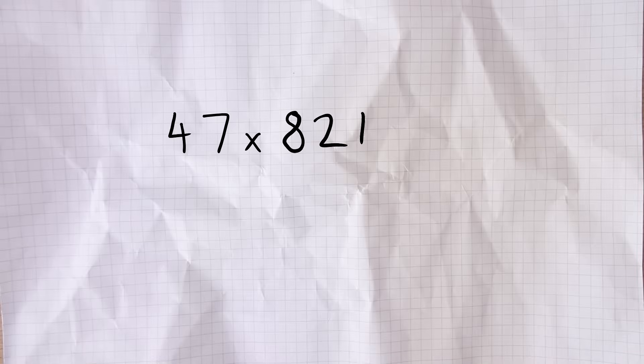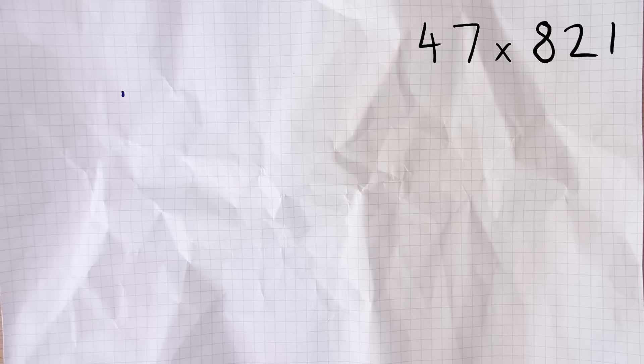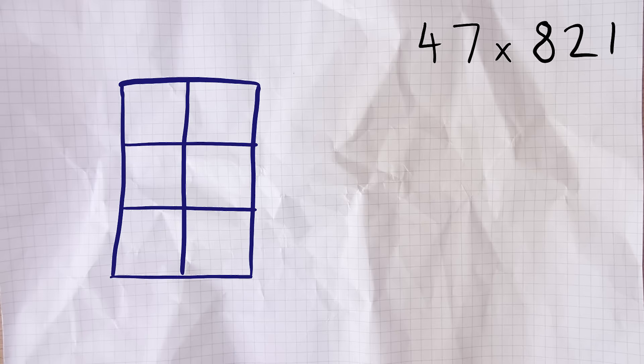The first example: 47 times 821. We're going to be writing our numbers across the top and down the right hand side of a grid, and each digit needs its own column or row. So the grid will look like this. You can see I've got space for two numbers across the top and three numbers down the right hand side.